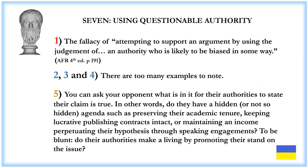Fallacy 7 is the fallacy of attempting to support an argument by using the judgment of an authority who is likely to be biased in some way. Since the 19th century there have been too many examples to note. You can ask your opponent what is in it for their authorities to state their claim is true — do they have a hidden agenda such as preserving academic tenure, keeping lucrative publishing contracts intact, or maintaining an income through speaking engagements? Do their authorities make a living by promoting their stand on the issue? If yes, and they're committing many of the fallacies discussed here, then the authority is biased and should not be used.